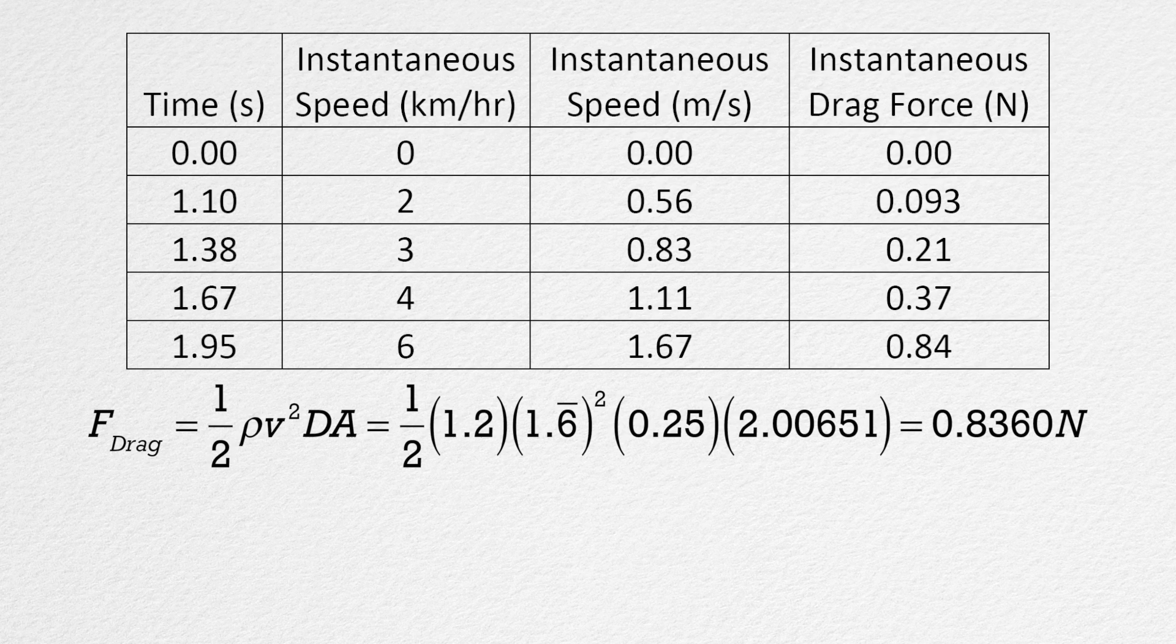We multiply 1 half times the density of the air, 1.2, times the square of the instantaneous speed at each time, times the drag coefficient of 0.25 times the cross-sectional area of 2.00651. And you can see we have the instantaneous force of drag at each time.